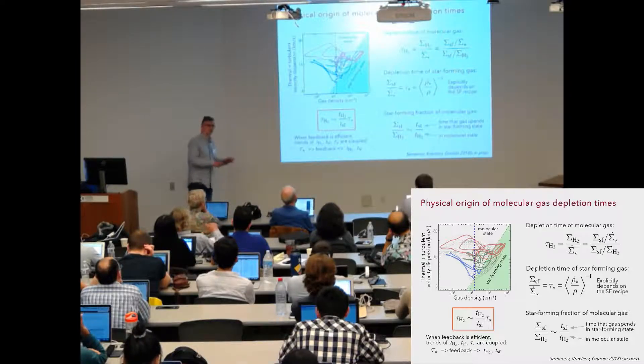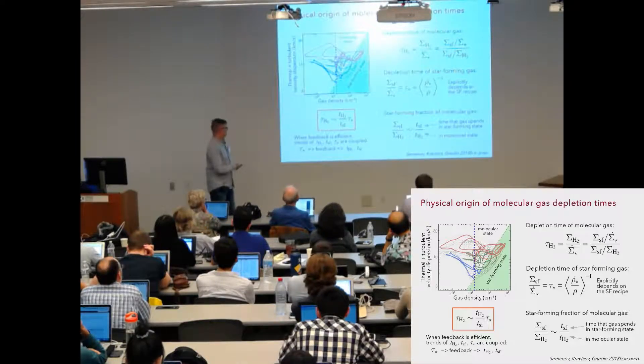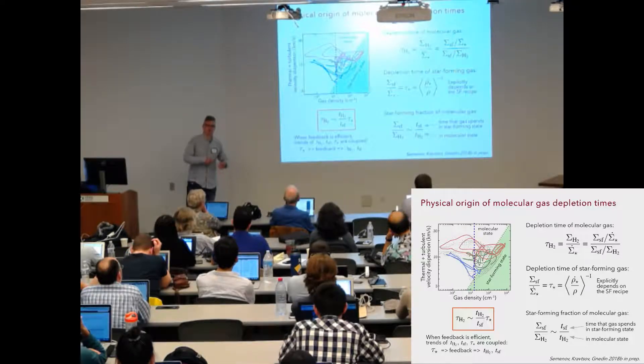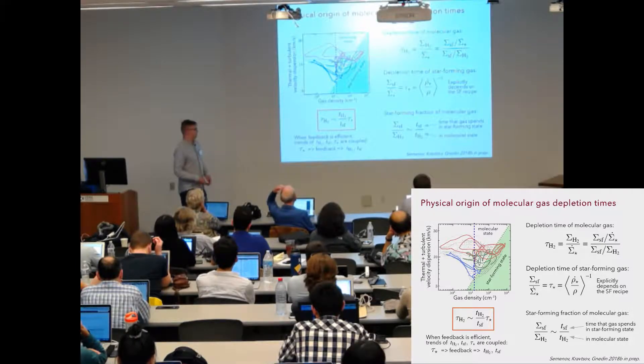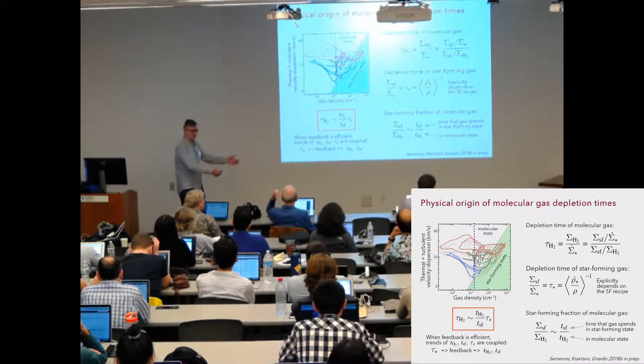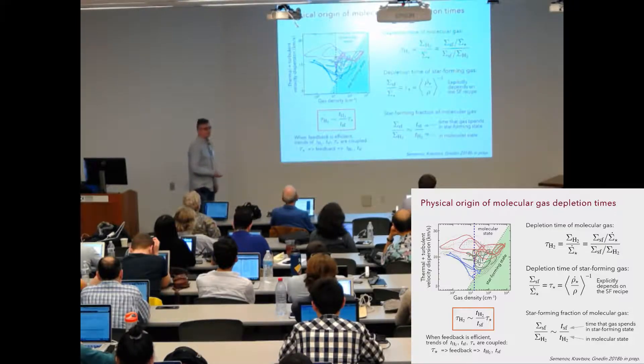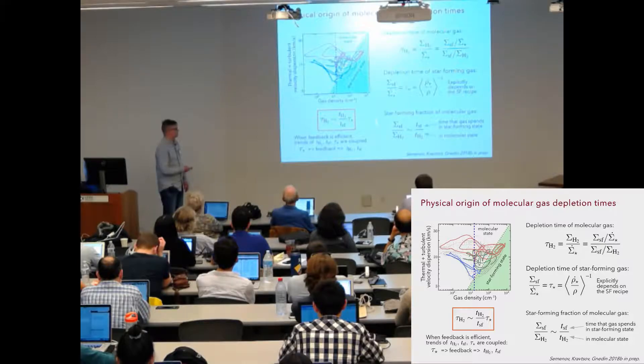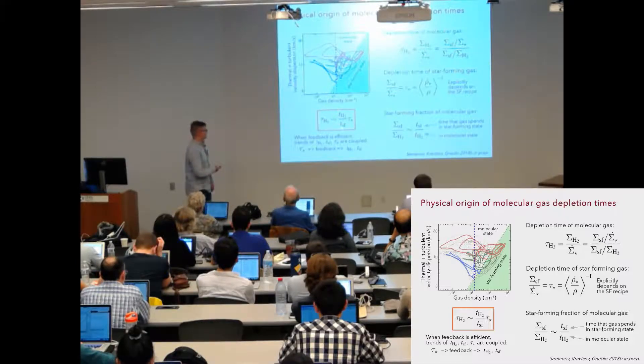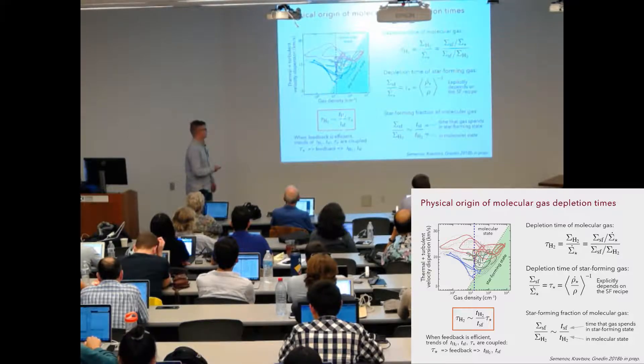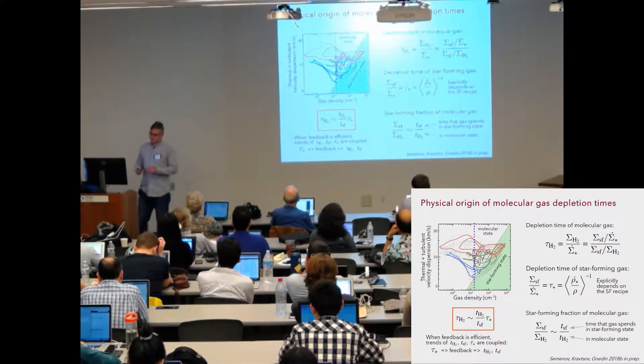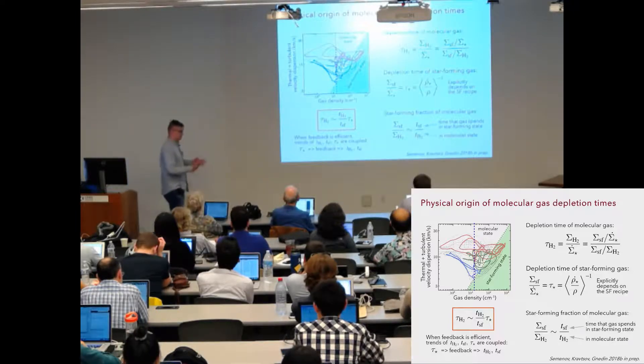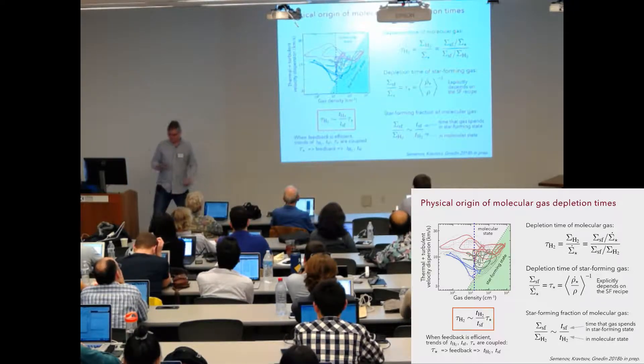The idea is that when feedback is efficient, first of all, all these time scales will depend on things like local assumptions about star formation, kiloparsec scale, density of gas. But the idea is that when feedback is efficient, these trends become dependent on each other. They are coupled because the local depletion time of star forming gas defines how much energy and momentum is released in the ISM locally. And this energy and momentum destroy star forming and molecular gas and thereby it limits the lifetime of gas in this state. This mechanism couples these timescales and as a result, the dependencies of these timescales from, for example, gas surface density cancel out and depletion time of molecular gas becomes constant. Again, this is quite a qualitative version of our explanation. And if you want more details, please ask me or stay tuned for the paper.